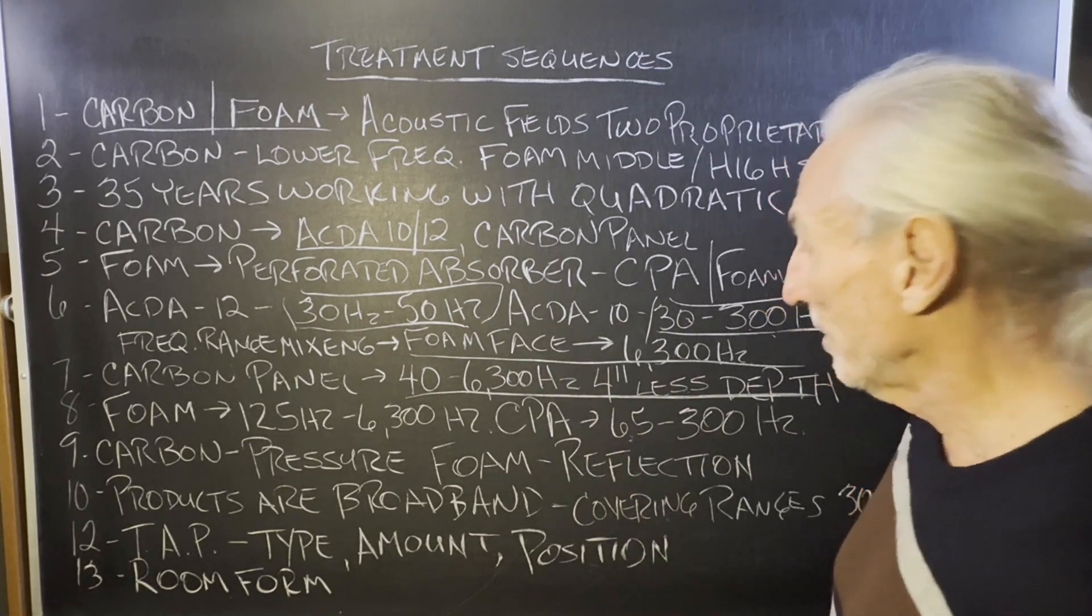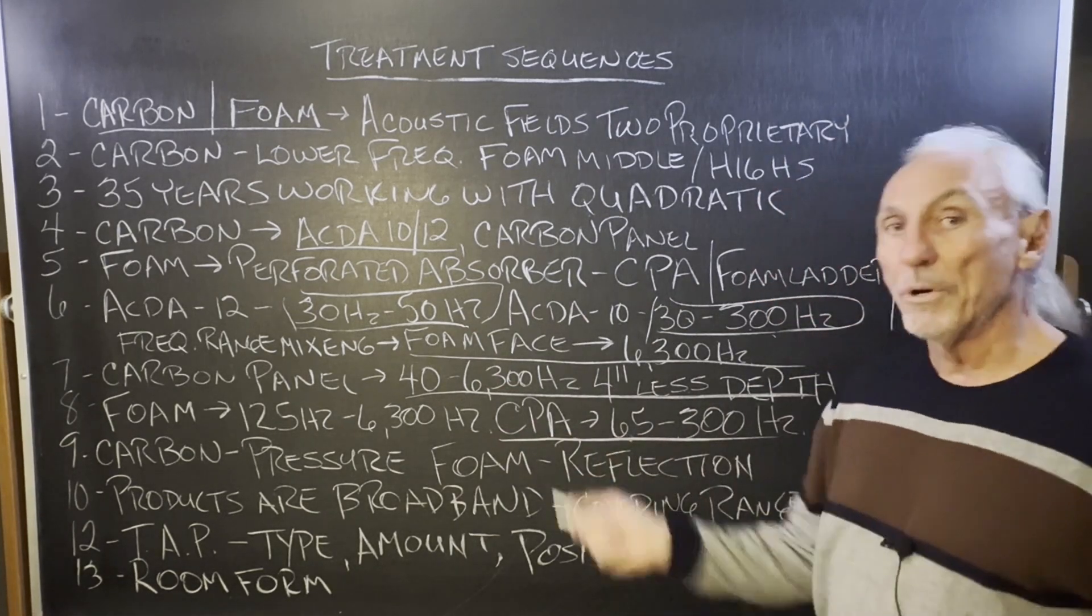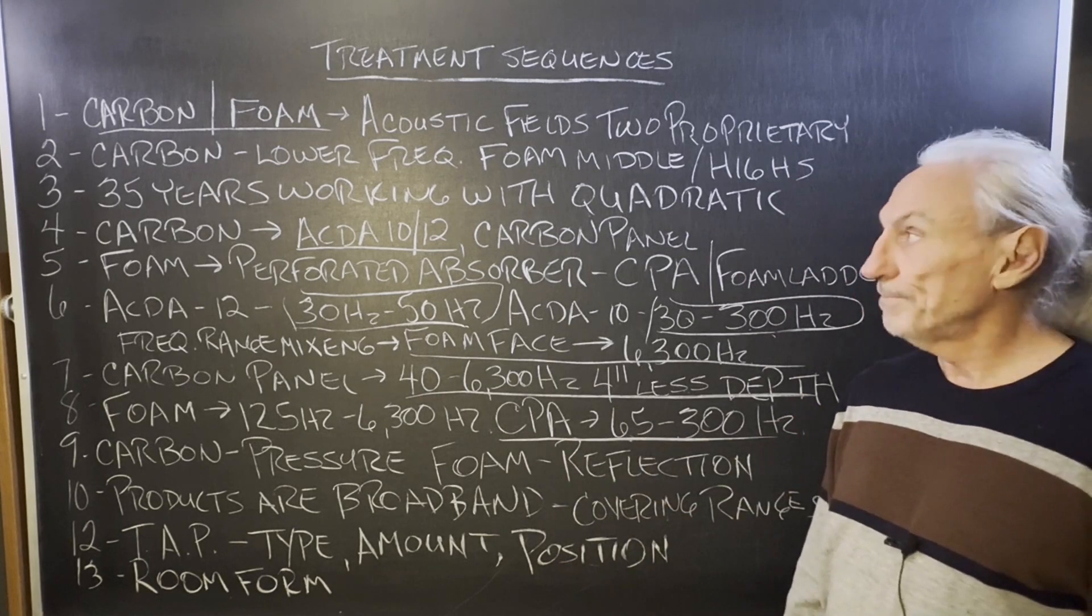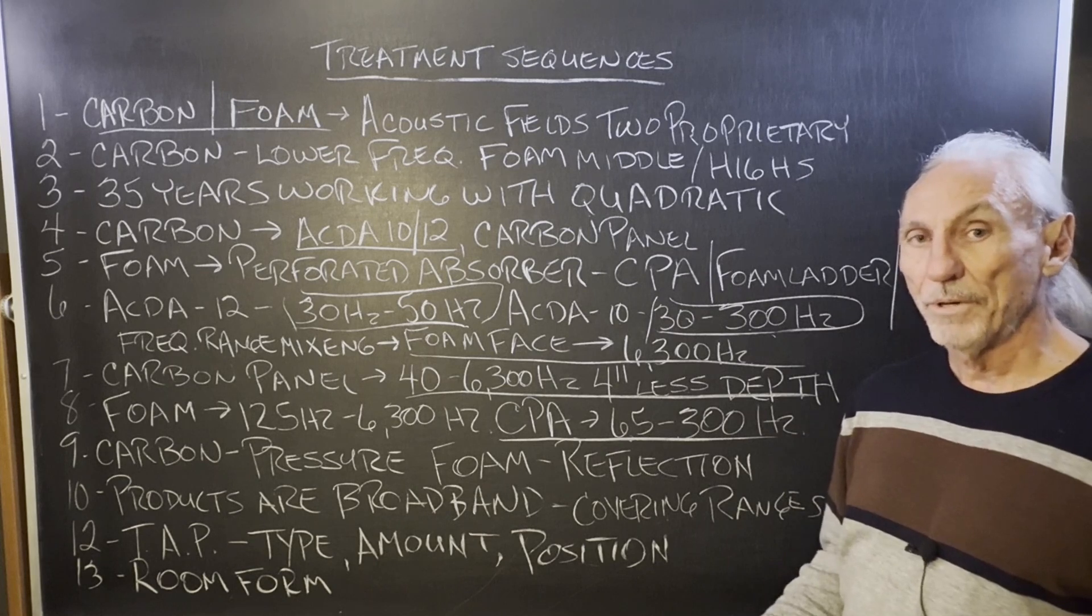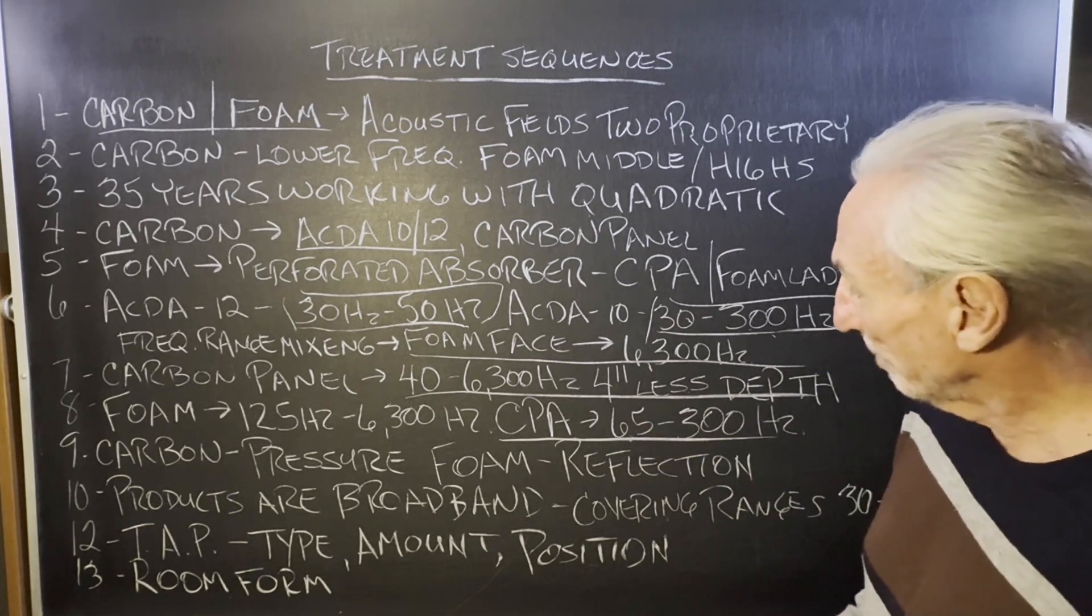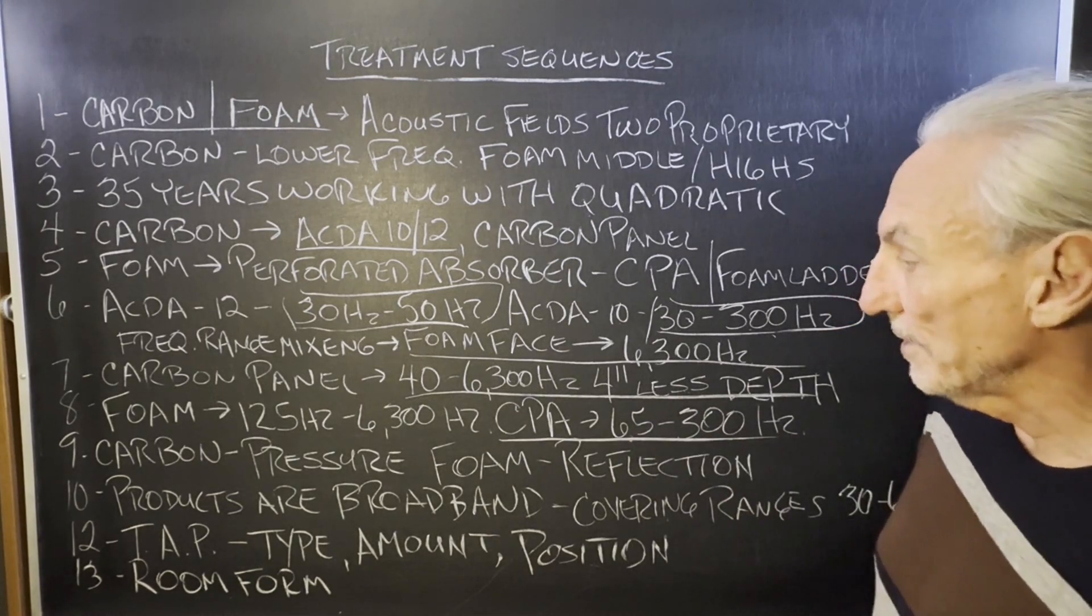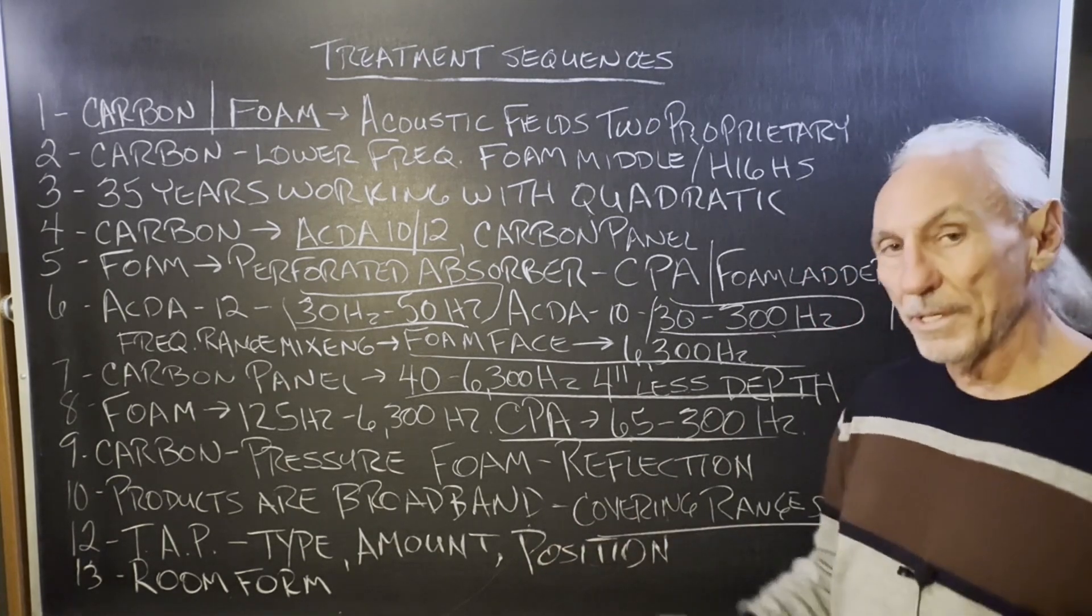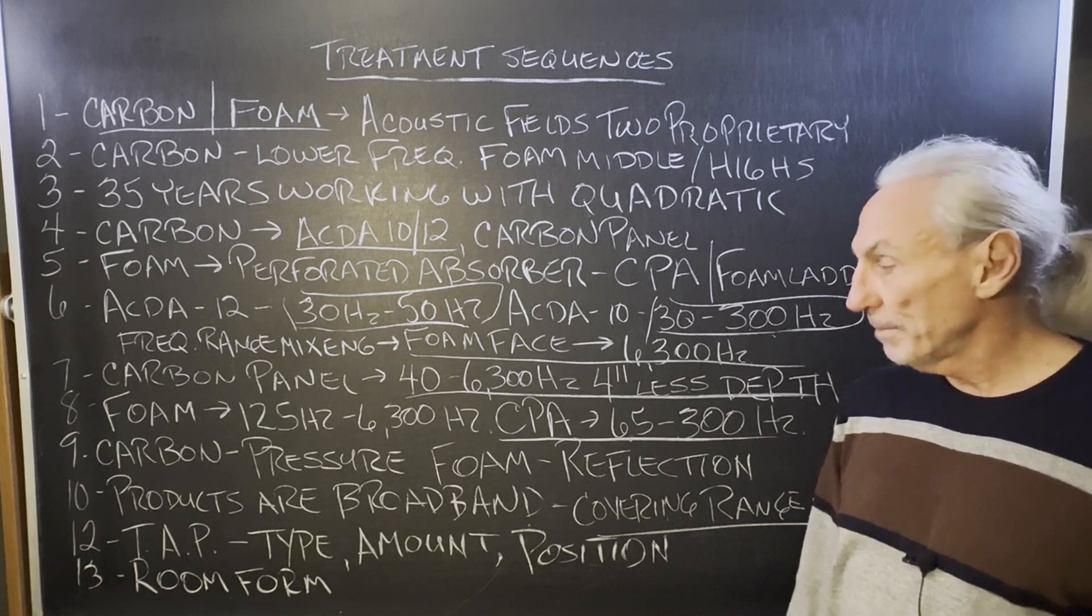Okay. So, foam extends the range up to 6300. Our CPA is kind of a hybrid. Put our foam inside a perforated absorber. That's how we get the 65 cycles. The three layers of foam. So, you have six inches of foam with the perforated absorber technology. That gets us down to 65, which is where we need to be for wall hanging unit, or for ceiling hanging units. So, most of our products are broadband covering ranges. And the big range is 30 to 6300. That was our focus when we were designing things.